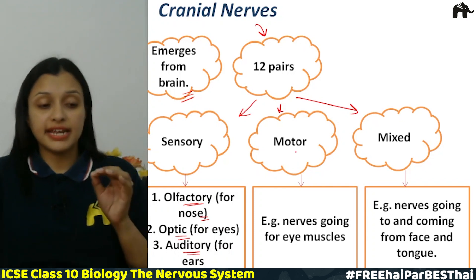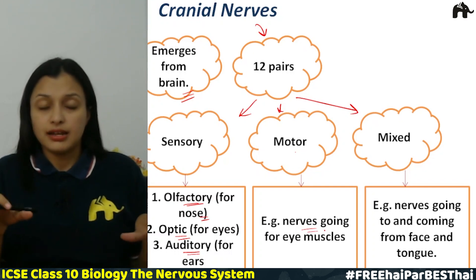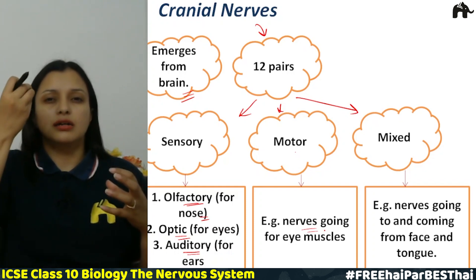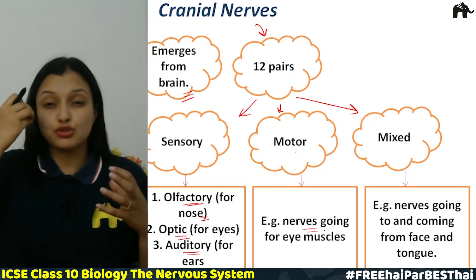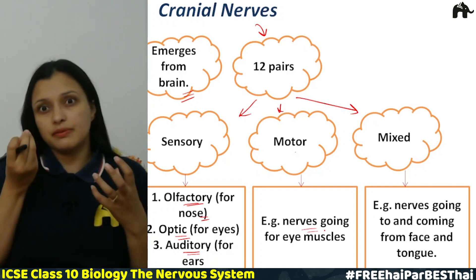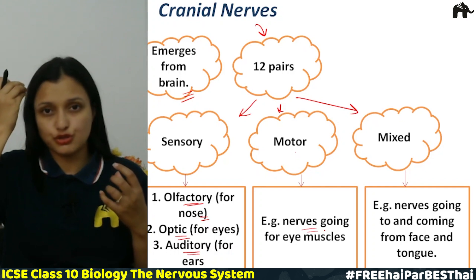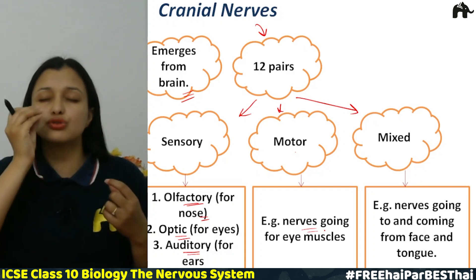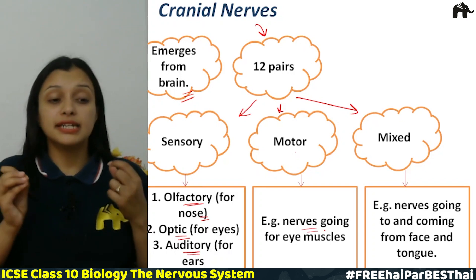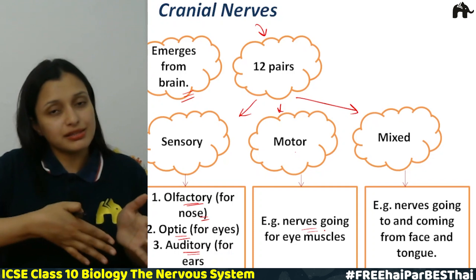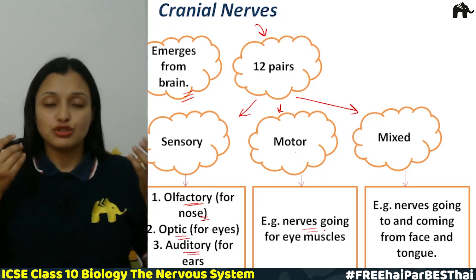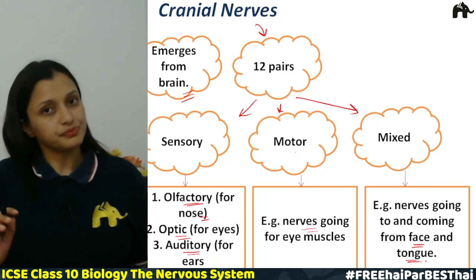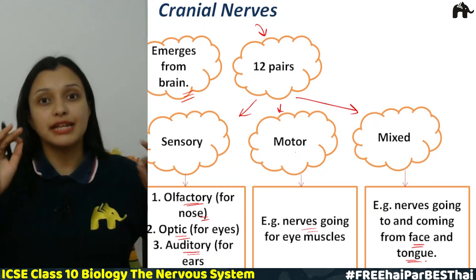Motor cranial nerves go to muscles such as the eye muscles. For example, if a particle comes near your eye, sensory nerves send a signal to the brain, and the brain sends a signal back to the eye muscles to close the eye. Mixed cranial nerves have functions of both sensory and motor nerves — these go to and from the face and tongue.